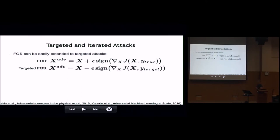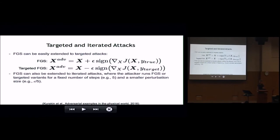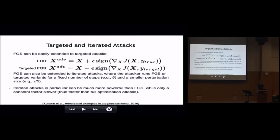FGS is easy to extend for targeted attacks. In normal fast gradient sign, we move along the gradient with respect to the true class of the original input, but we can instead target a particular class and move in the opposite direction towards the target class. It can also be extended to a simple iterated attack, where you run your preferred variant of fast gradient sign for a fixed number of steps — say, five steps — with a smaller perturbation size at each step, accumulating those perturbations along the way. Iterated attacks are much more powerful than fast gradient sign while only being a constant factor slower, meaning they're faster than the original optimization attack.